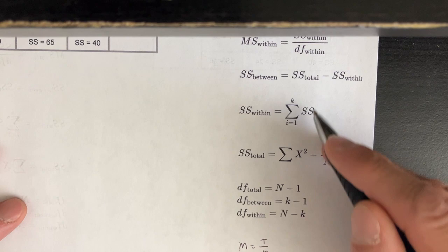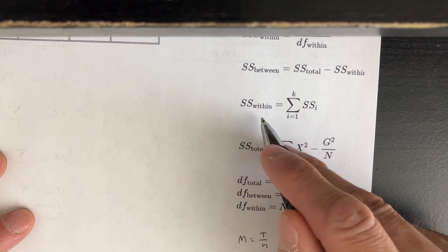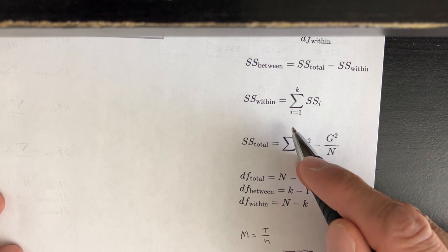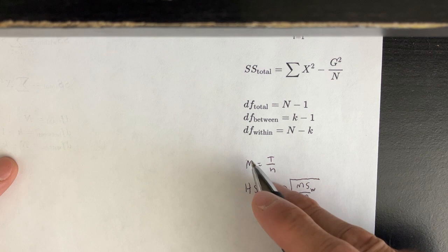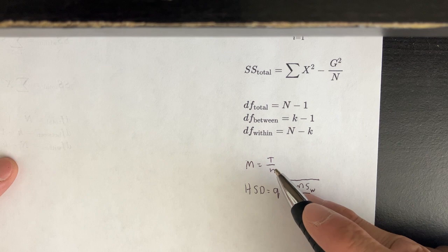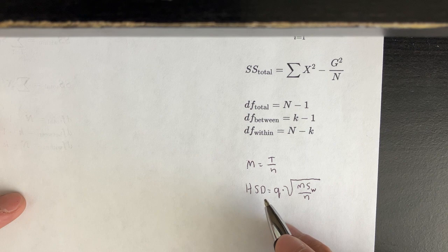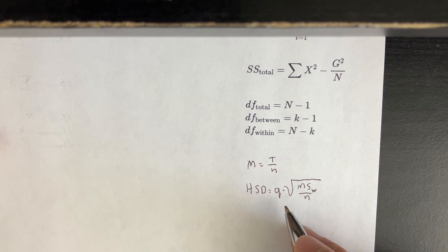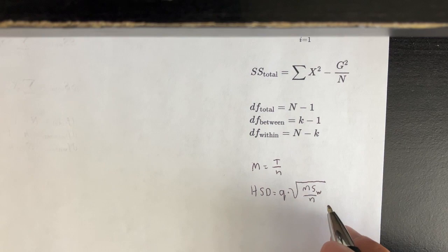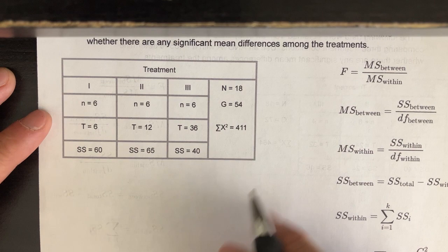I like to start at the top and work my way backwards. The sum of squares within and SS total were explained in the last video. I've also added this formula for a mean: for every group, the mean equals the total for that group over the little n, or sample size of that group. HSD is the post-hoc test you can run when sample sizes are equal — it uses a q value from a q table, times the square root of mean squares within over sample size.